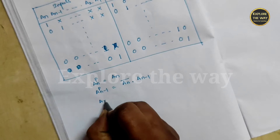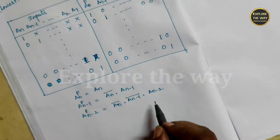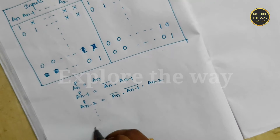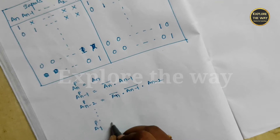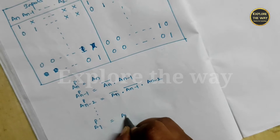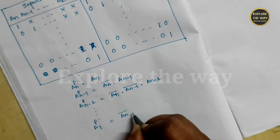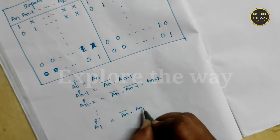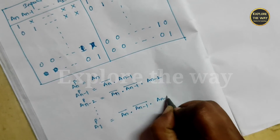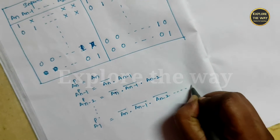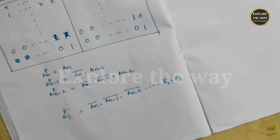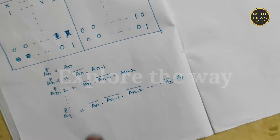So we can write: an-1^p equals 1 only when an is 0 and an-1 is 1, irrespective of the remaining inputs. Similarly for an-2, it continues down to the lowest priority input. The lowest priority input will be given access only when all its higher priority inputs are not enabled.